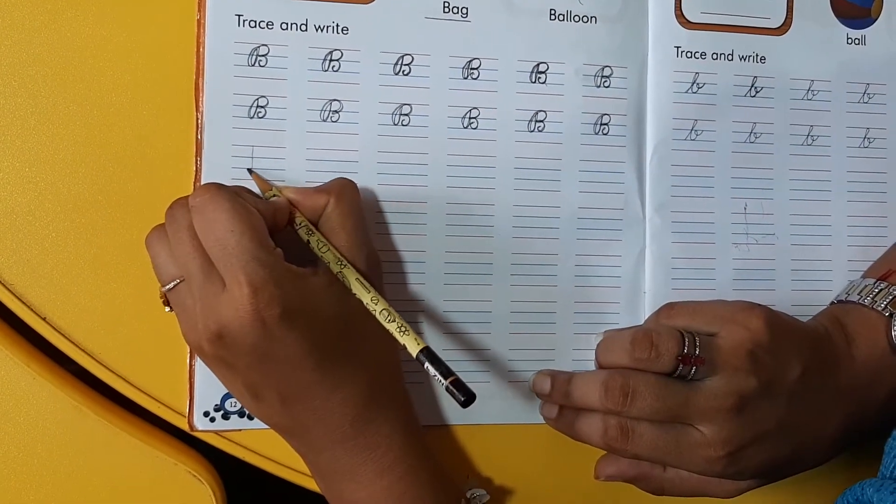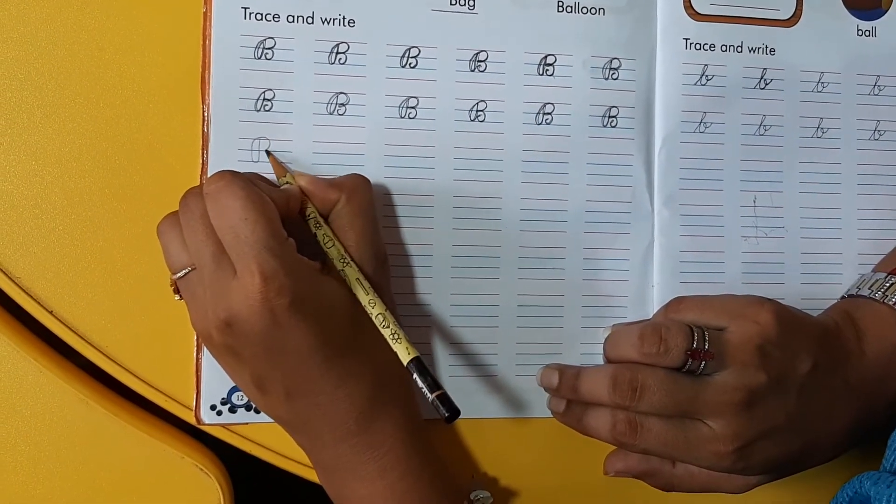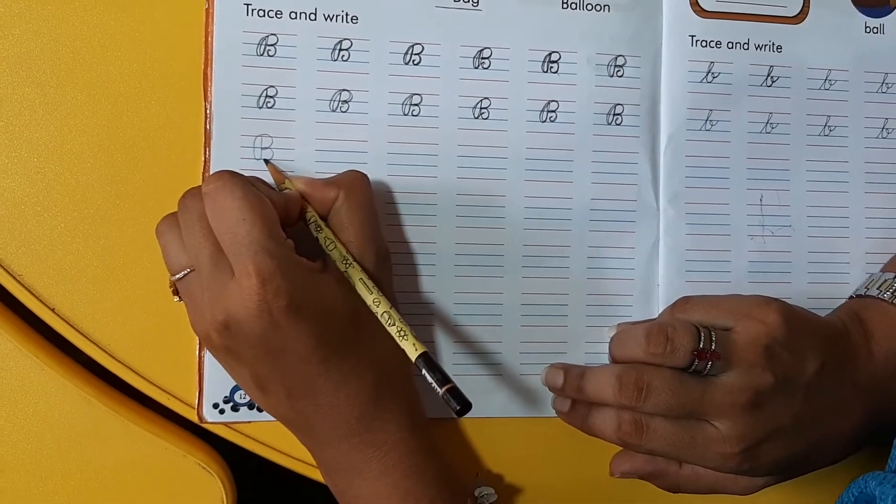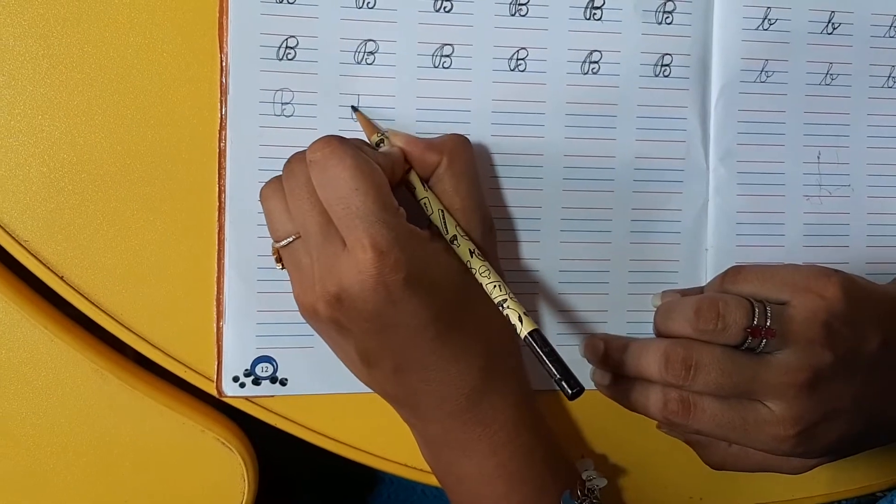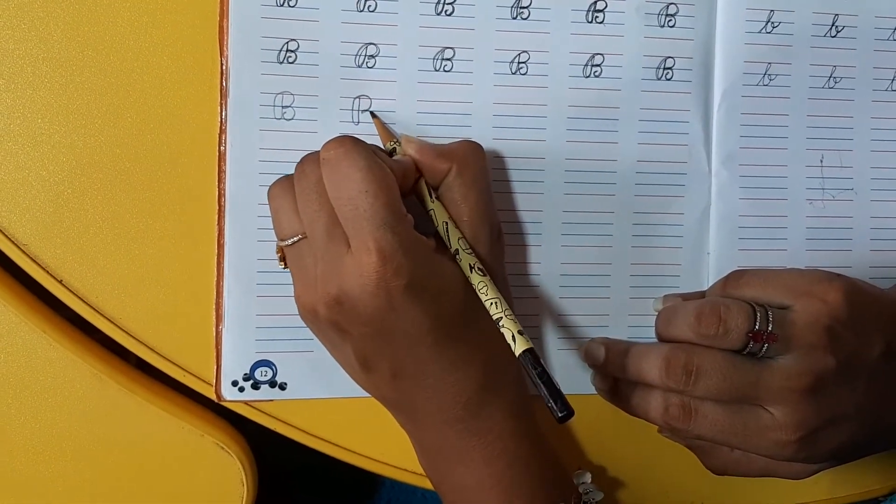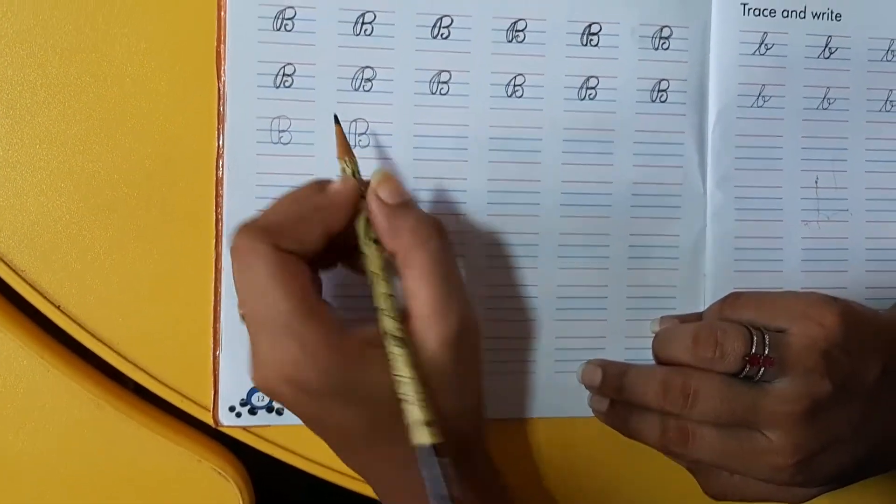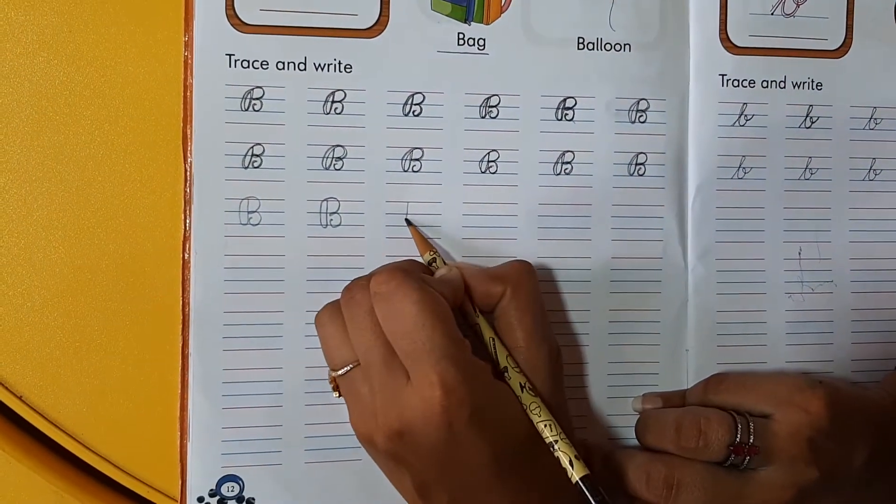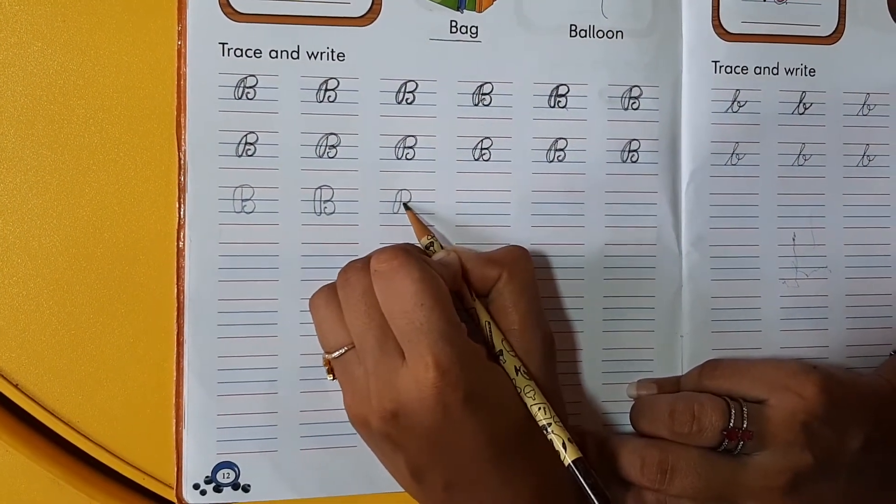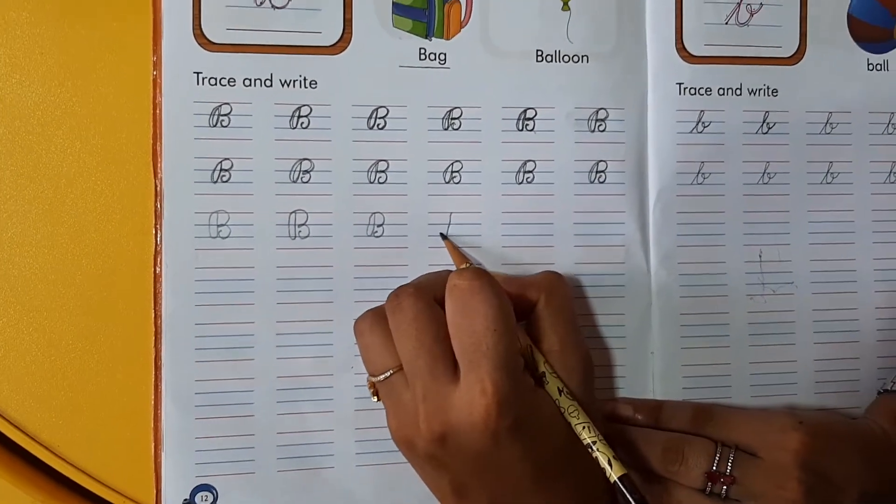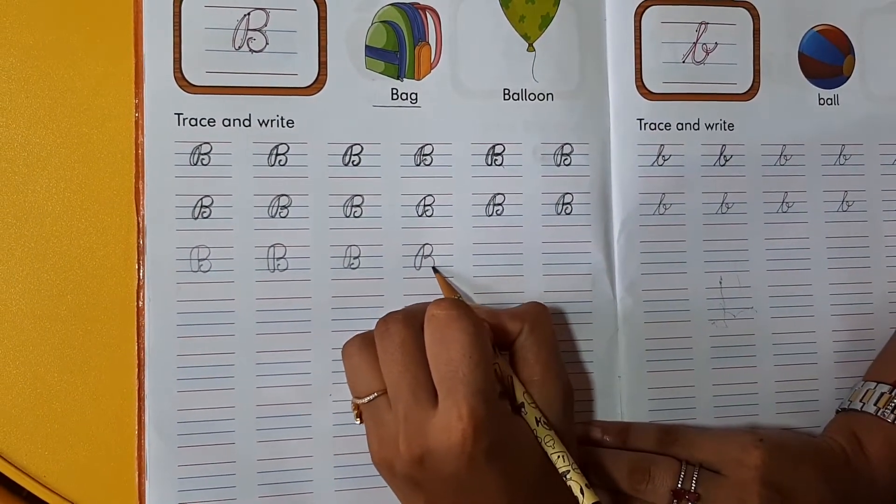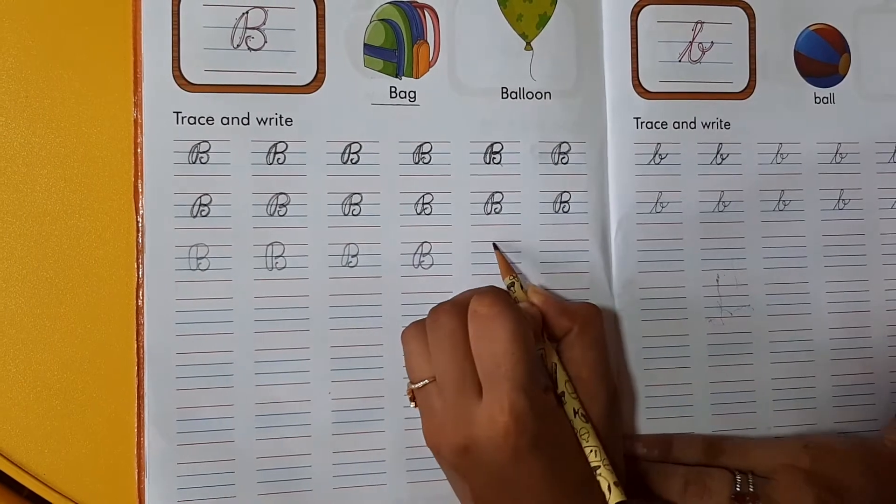Hum letter B likh rahe hai. Dekho. Achha wala letter B. We all are writing letter B. B for burger. Yummy yummy sa burger. Ye. Aak sab logon ko burger achcha lagtah hai? Yes. Ma'am also like.